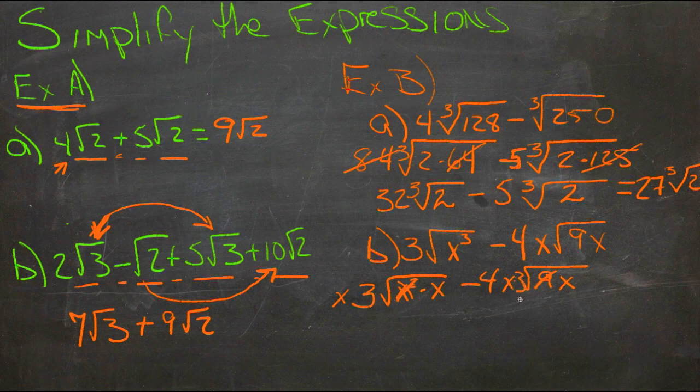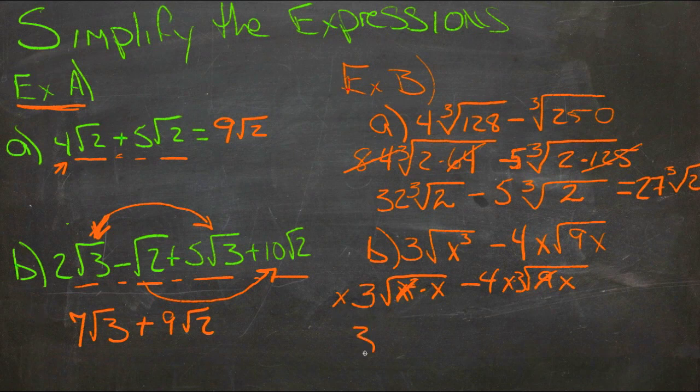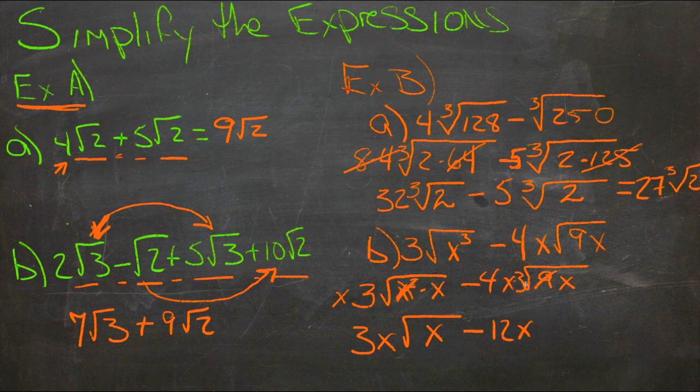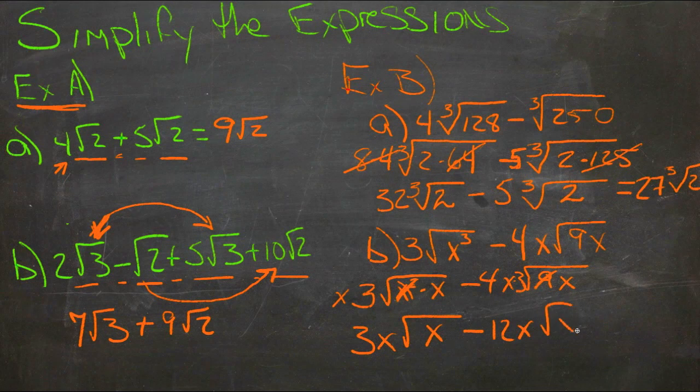I need to leave myself a little more room when I'm doing that, and leave the x underneath, so we'll have 3x roots of x, minus 4 times x times 3, so 12x square roots of x.